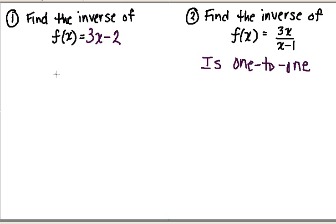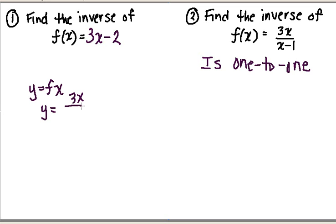That's the first step. The second step is to solve y equals f of x for x — in other words, we're going to solve y equals 3x over x minus 1 for x.